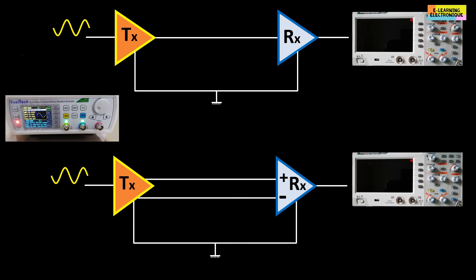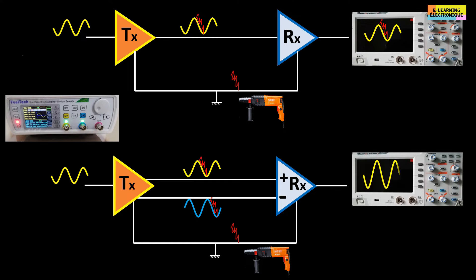The second assembly is identical except for the connection which is made symmetrically with a double wire conductor. Near the wires, there is a motor in action like a drill. This machine generates electromagnetic radiation which induces a parasitic current on the conductive wires. On the first asymmetrical assembly appears on the oscilloscope two signals: the sinusoidal curve accompanied by a parasitic signal. For the second assembly built symmetrically, the final signal is identical to the original signal.